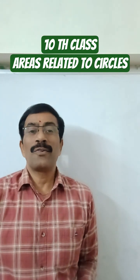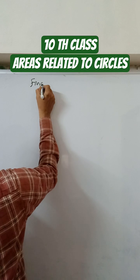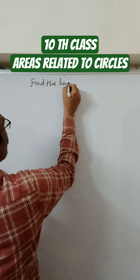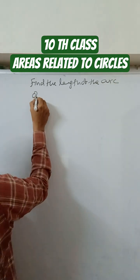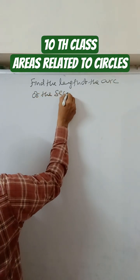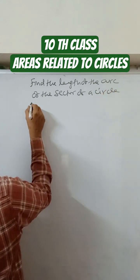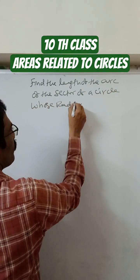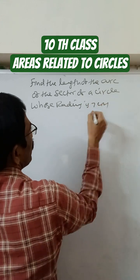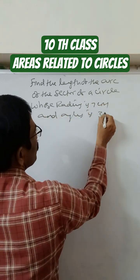The question is: find the length of the arc of the sector of a circle whose radius is 7 centimeters and angle is 30 degrees.